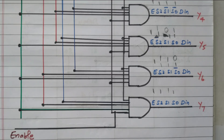In this video we discussed the 1-to-8 demultiplexer: 1 input and 8 outputs, and how this 1 input is produced as 8 different outputs based on the selection line. We discussed the truth table, block diagram, followed by the logic gate implementation. We saw and verified each output — from Y0 to Y7 — substituting values 0,0,0 through 1,1,1.